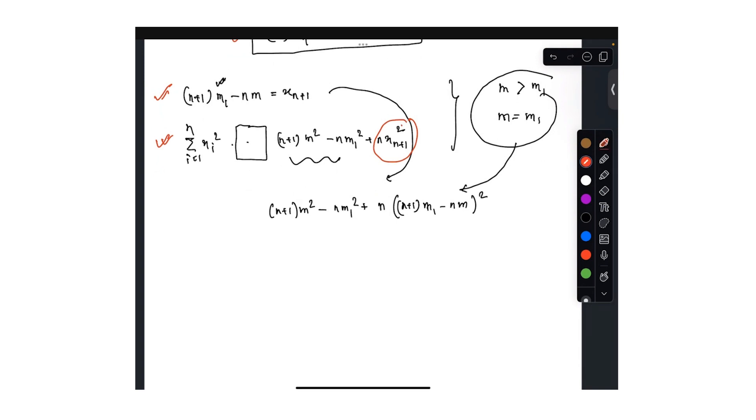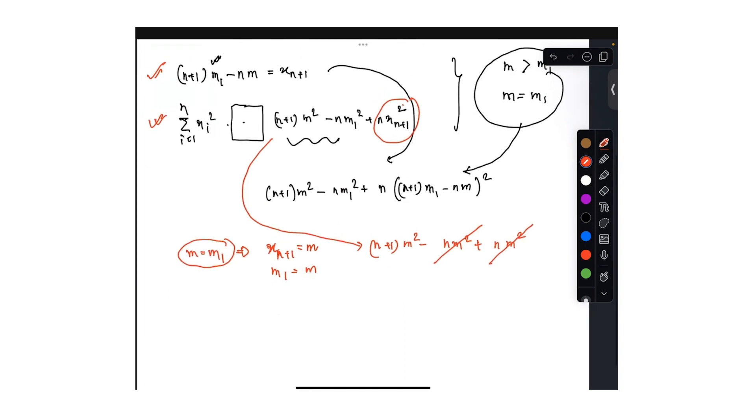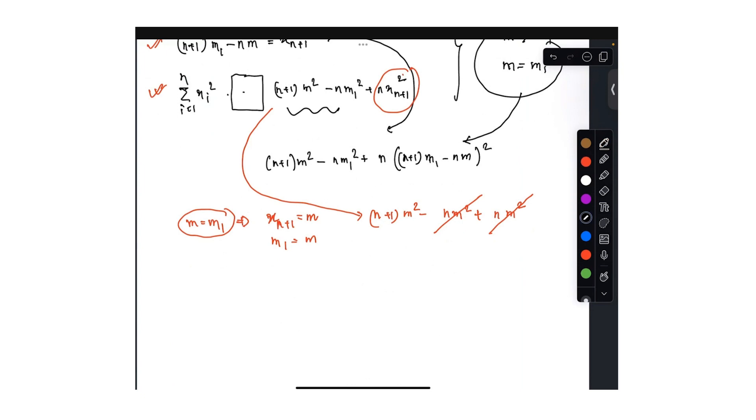So when these two equations are given, if m is equal to m1, we already know that xn plus 1 we can write in terms of is equal to m. We already proved that. So therefore, this equation will be simpler. You can just replace xn plus 1 whole square as m. Also, you can replace m1 as m. So this turns out to be nothing but n plus 1 m square minus n m square plus n m square. This cancels out. So we are getting that summation of xi square. So therefore, we are required to find the relationship.